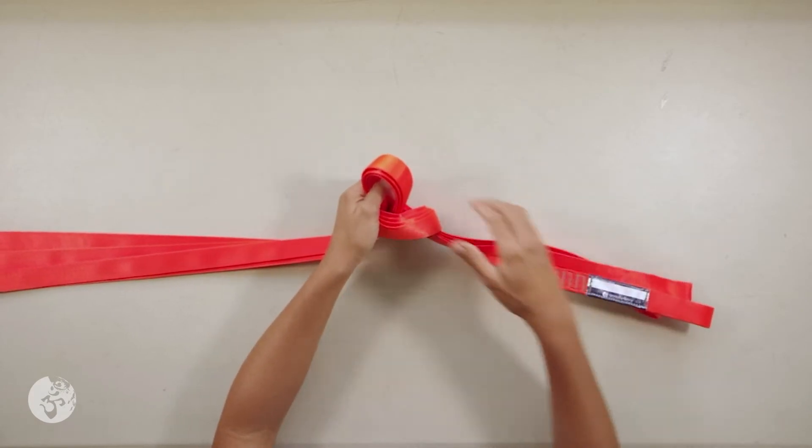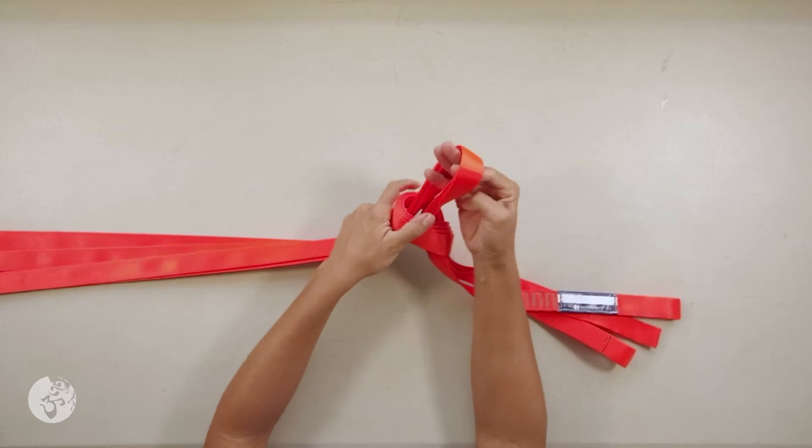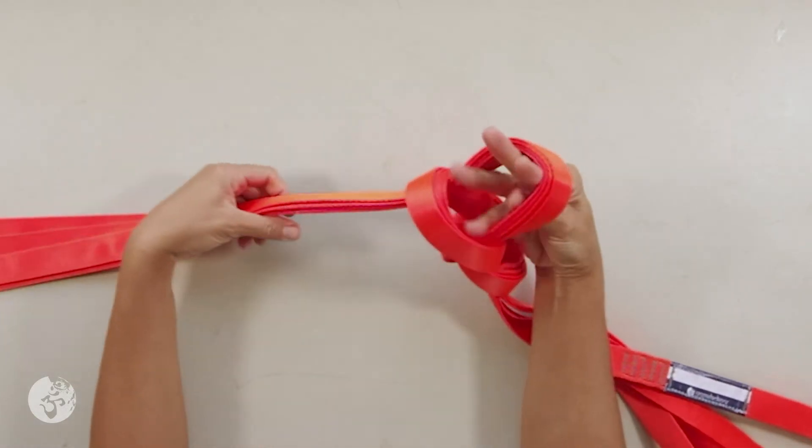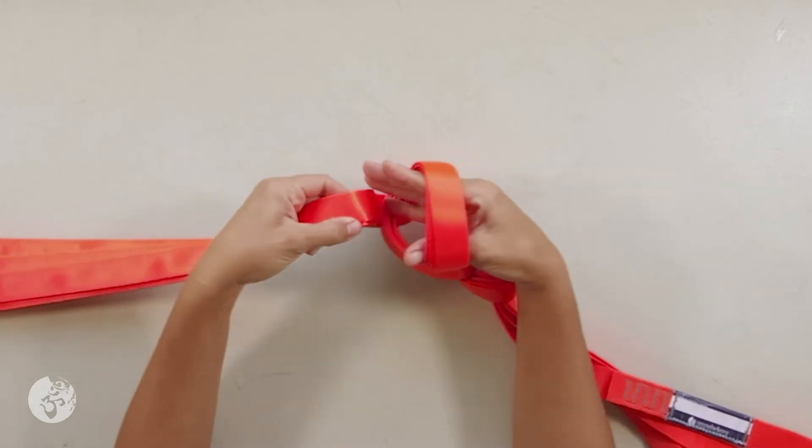You can take another tiny little bit of tension on that side but it's not necessary. Now from there I'm going to continue passing my fingers through. I don't really need to pass my entire hand.